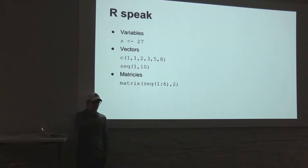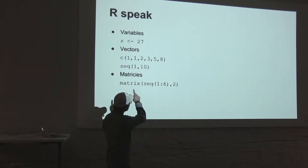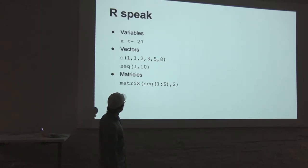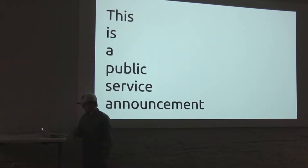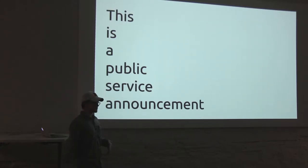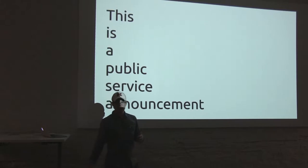If you want to do an array of 1 through 10, you just write 1:10. It's nice. Matrices I showed earlier — just a two-dimensional array. This isn't really a talk about R itself, but about how you can use R inside of Ruby.